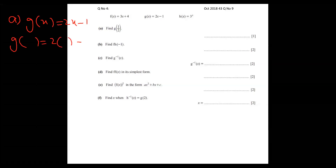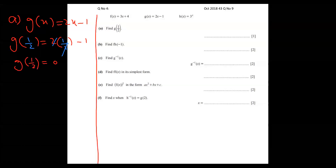Replace half in both x places. The 2 and half cancel, and one minus one is zero. So the answer of g of half is zero. The first part is done.